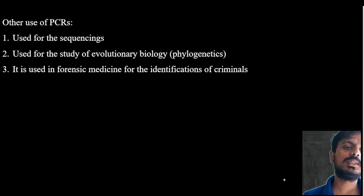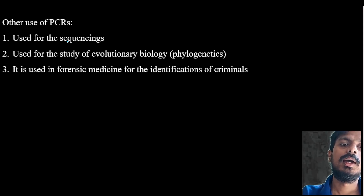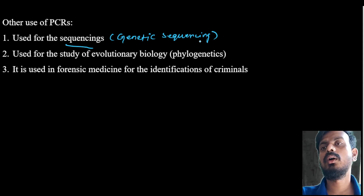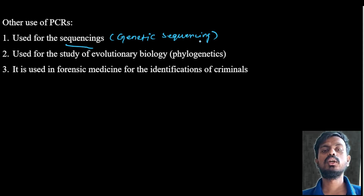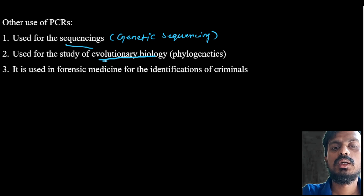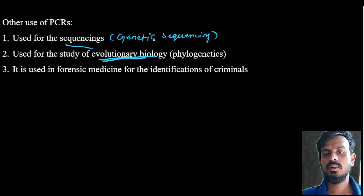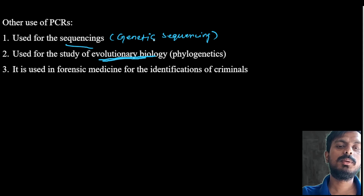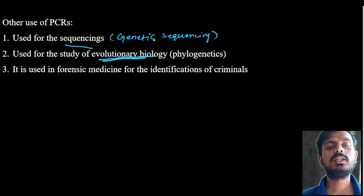Other uses of PCR include gene sequencing or genetic sequencing — to determine the exact composition of a particular DNA. It is used to study evolutionary biology and for forensic medicine — for identification of criminals and clinical purposes.